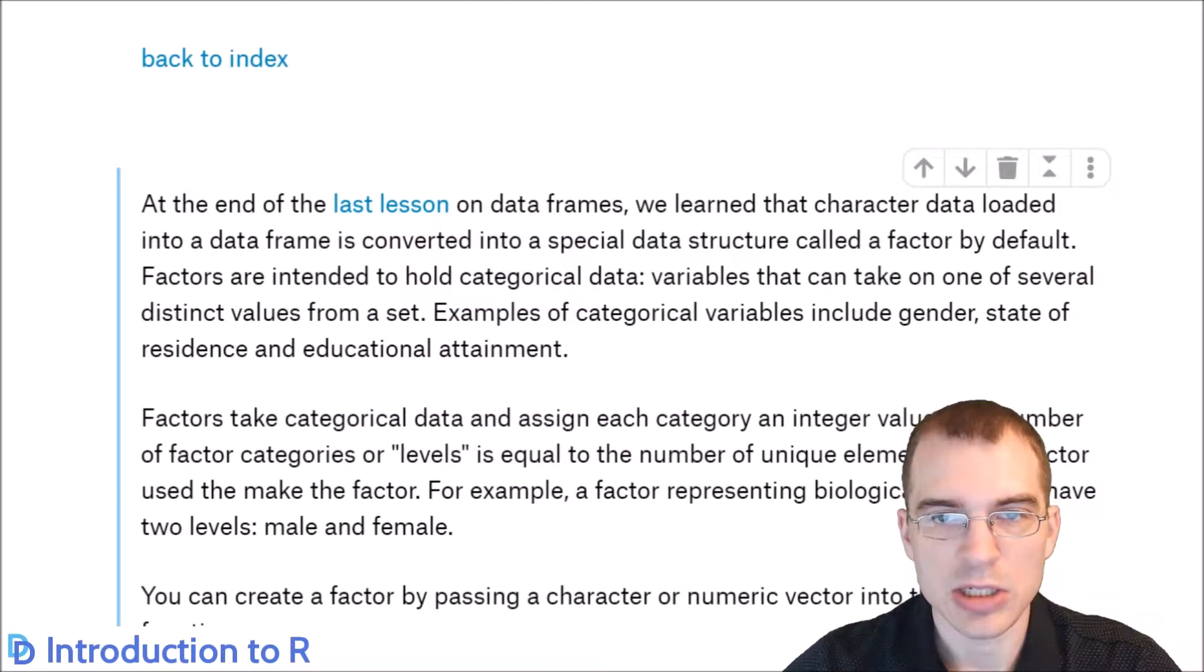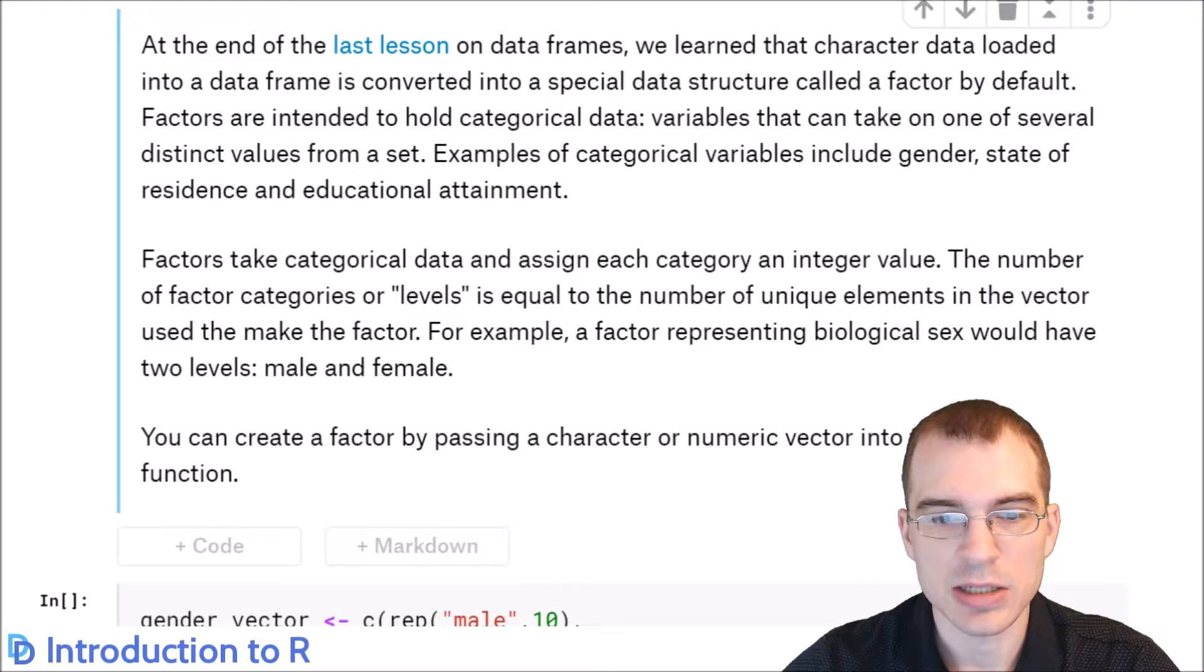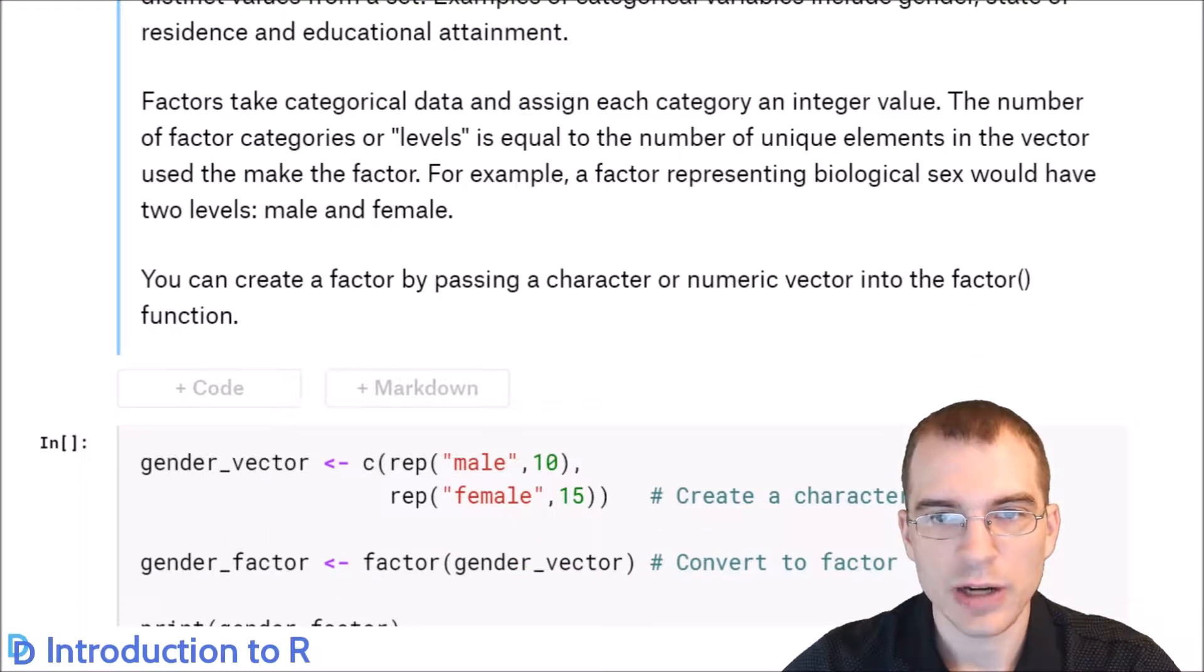Factors are essentially a special data type designed to hold categorical data. And what a factor does is it takes a categorical vector and assigns each unique value a different level that is an integer index.